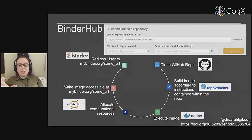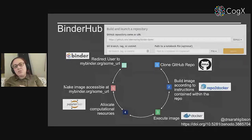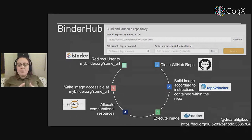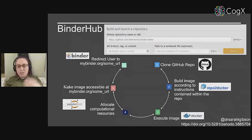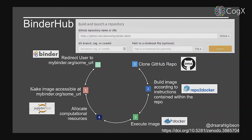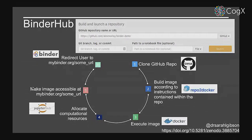So what open source technology do we use to build a BinderHub? On the mybinder.org webpage, you copy the URL of your GitHub repository into the form and click launch. The first thing that happens is your GitHub repo is cloned, and then a tool the Binder team develops called repo2docker comes along and builds a Docker image according to the instructions in your repository — your requirements.txt files or whatever — copying all your code and packages together.